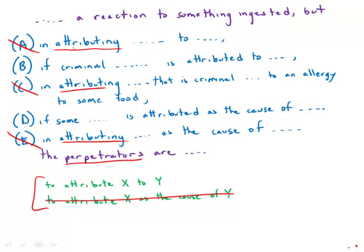The verb 'attribute' takes the preposition 'to', so 'is attributed to' - that is perfectly correct. 'Is attributed as the cause of' - that is just train wreck wrong. And so immediately we narrow everything down to answer choice B.